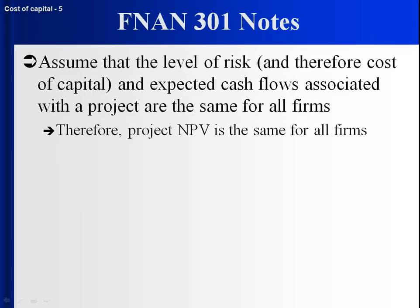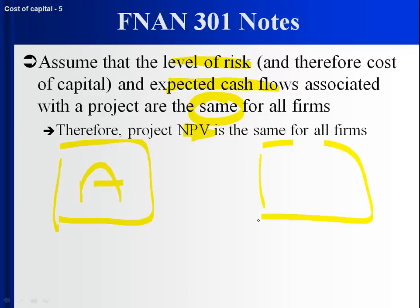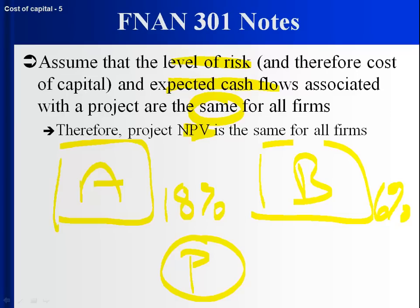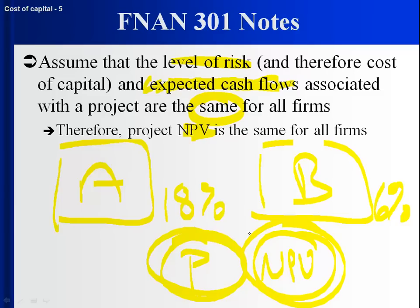One final note: we're going to assume that the level of risk and the expected cash flows for a particular project are the same for all firms. An implication of that is that the net present value is the same for all firms. Suppose you've got firm A and firm B. Firm A is involved in a lot of risky activities, so its weighted average cost of capital is 18%. Firm B is involved in a lot of safe activities, so its weighted average cost of capital is 6%. They're both looking at project P. For both firms, project P would have the same net present value, because project P has some expected cash flows associated with it. The level of risk of project P determines the cost of capital for project P, and the expected cash flows and the cost of capital are what determine the net present value of project P.